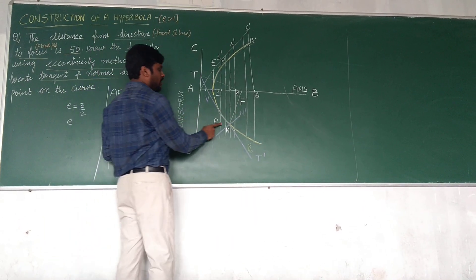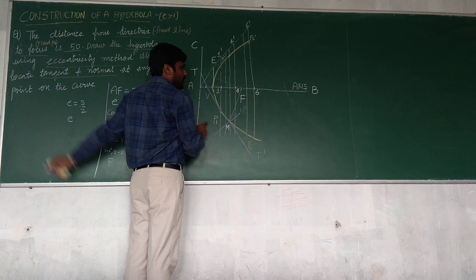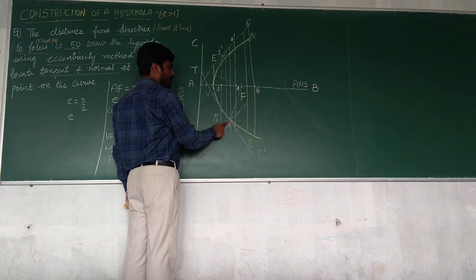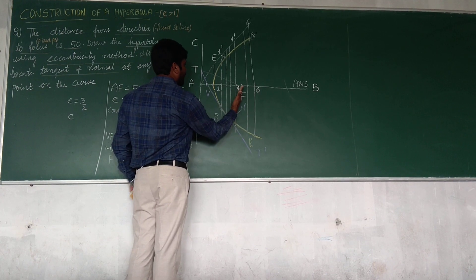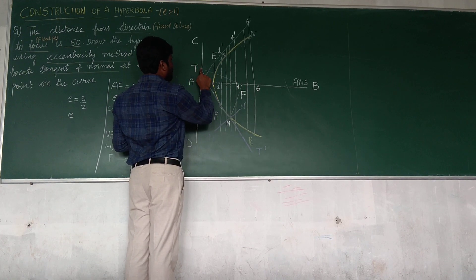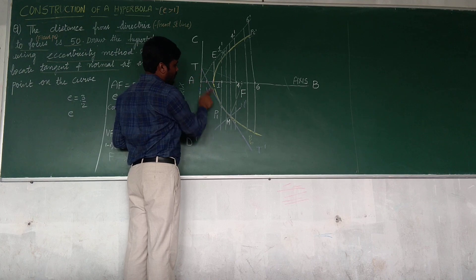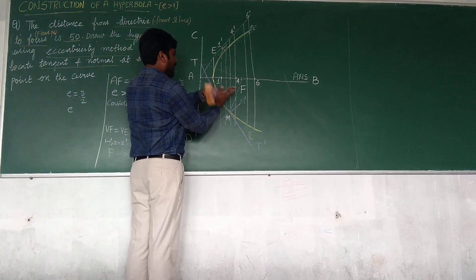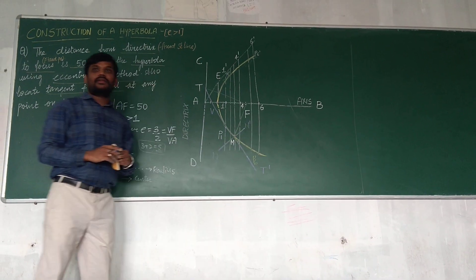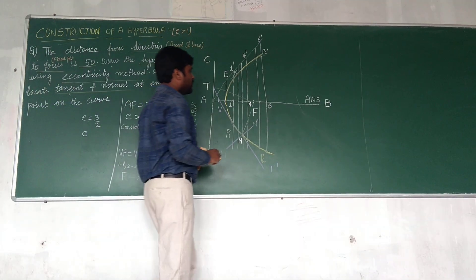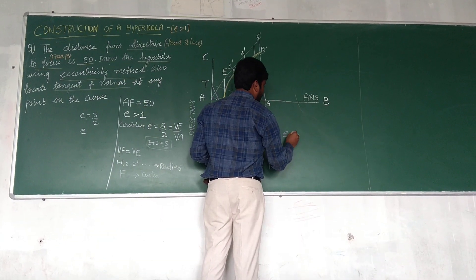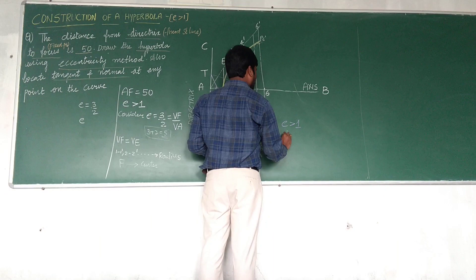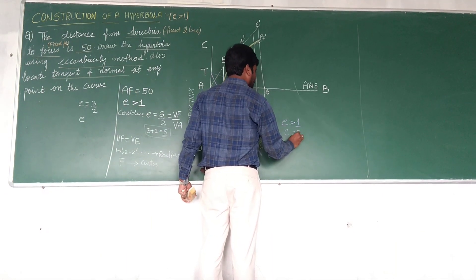So I have taken a point at some distance where I need to draw. You can draw anywhere, either here or here or anywhere. Take a point at some distance, so that T dash is tangent, perpendicular to tangent, 90 degree is a normal. I have told you, try to write compulsory e-value that is greater than 1 or whatever it is. E-value which we have chosen here, that is 3 by 2.